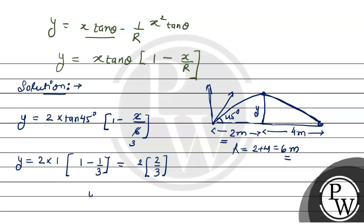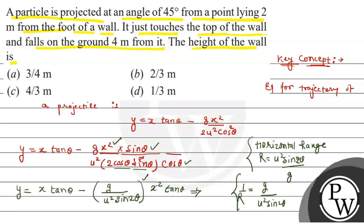The final answer is y equals 4 upon 3 meters. This matches option C. Option C is the right option. I hope you understood it well. Best of luck, thank you.